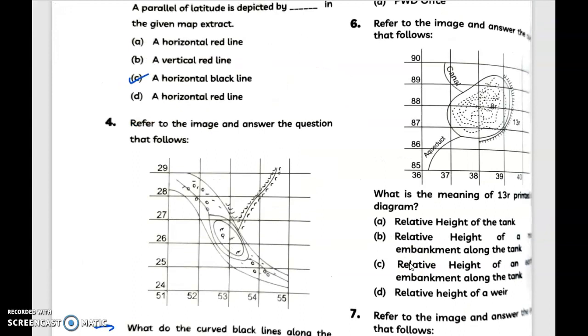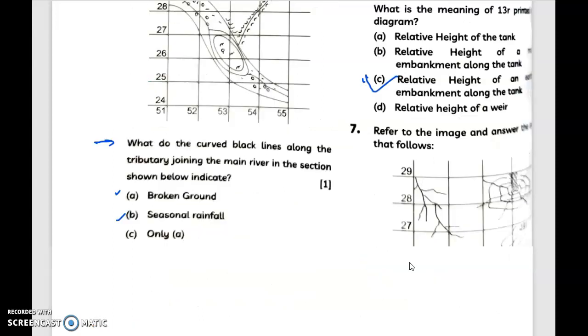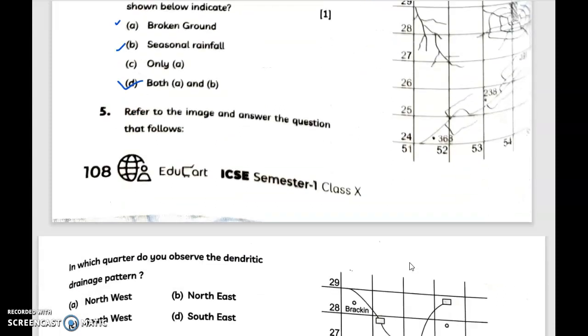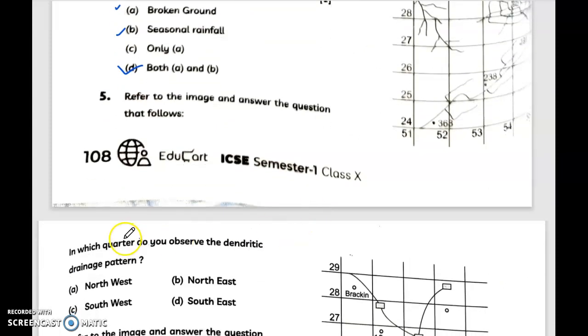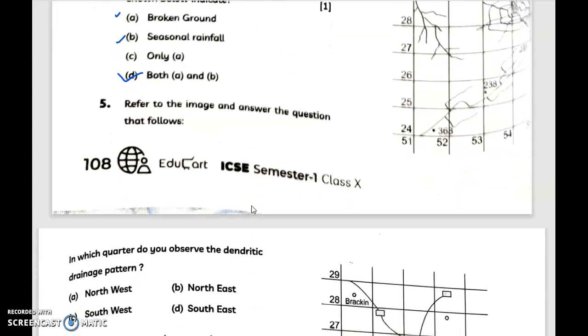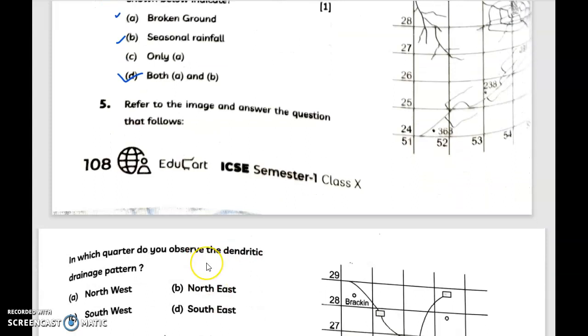Question number six: refer to the image and answer the question that follows. What is the meaning of 13R printed in the diagram? Answer is option C. Question number seven: refer to the image and answer the following. In which quarter do you observe the dendritic drainage pattern? Have a look - is it northwest or northeast or southwest or southeast? Answer is option A, that is northwest.